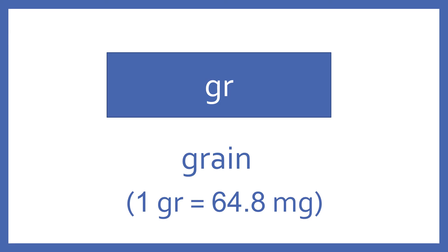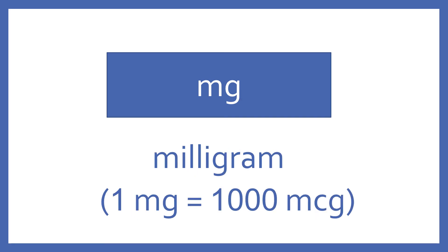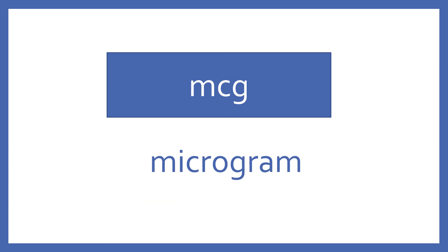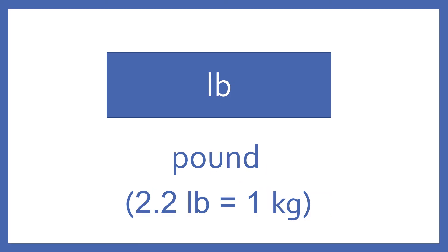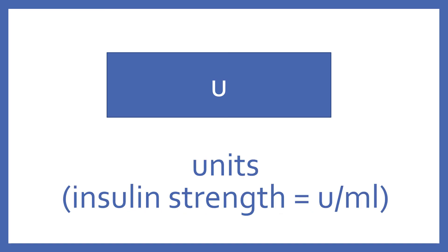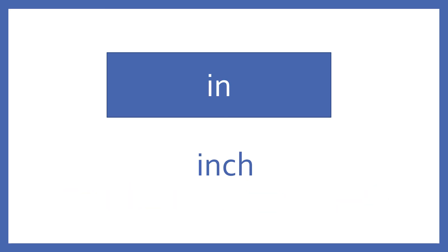GR: grain — one grain equals 64.8 milligrams. MG: milligram — one milligram equals 1,000 micrograms. MCG: microgram. KG: kilogram — one kilogram equals 1,000 grams. LB: pound — 2.2 pounds equals 1 kilogram. U: units — this is seen for insulin strength with units per mL. IN: inch.